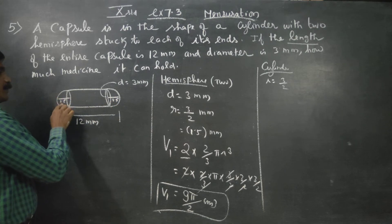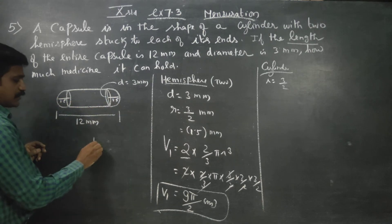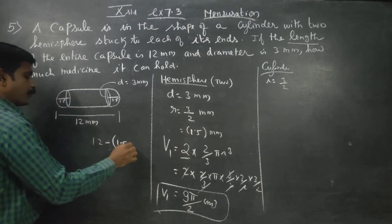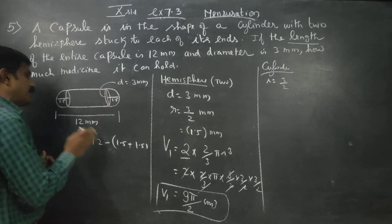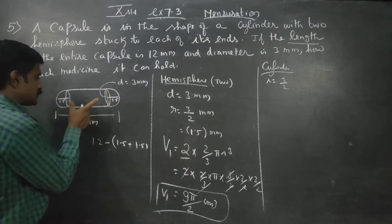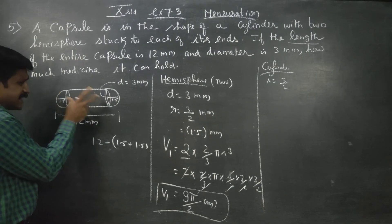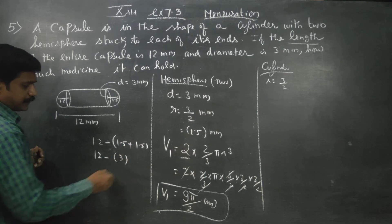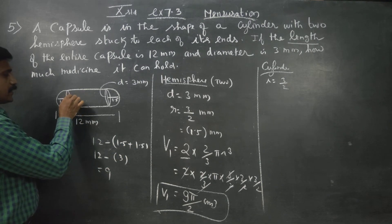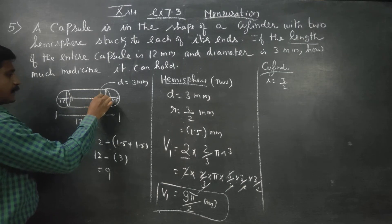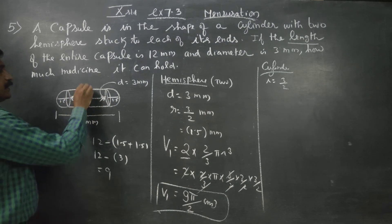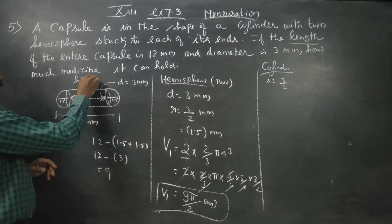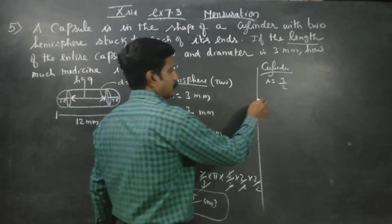The height of the cylinder: the total length is 12 mm, minus 1.5 mm on each end for the hemispherical caps. So 12 minus 1.5 minus 1.5 equals 9. The height is equal to 9 mm.